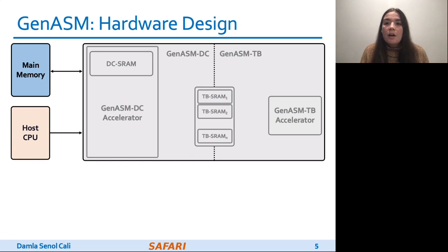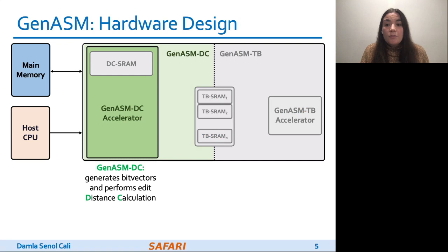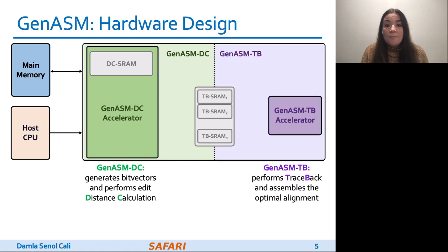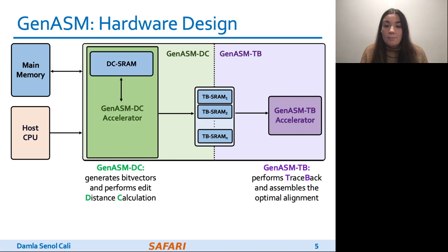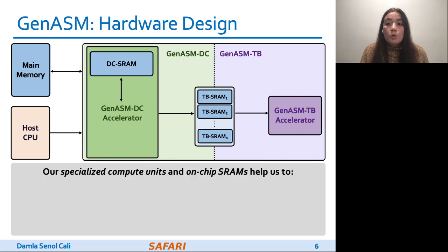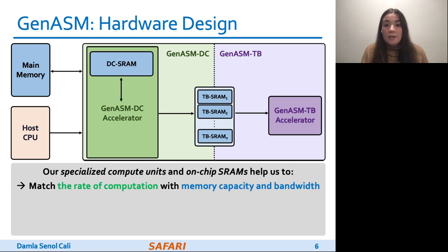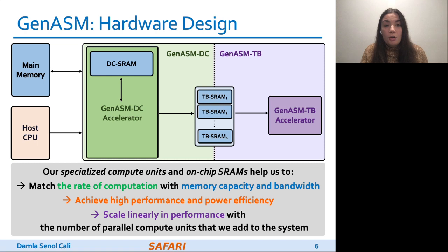Our co-designed hardware consists of two components. First, GENASM-DC, which provides hardware support to efficiently execute our modified BitAP algorithm to perform distance calculations. And second, GENASM-TB, which provides hardware support to efficiently execute our novel traceback algorithm to find the optimal alignment. GENASM also has two types of SRAM buffers, DC SRAM and TB SRAMs. Our specialized compute units and on-chip SRAMs help us to match the rate of computation with memory capacity and memory bandwidth, achieve high performance and power efficiency, and also scale linearly in performance with the number of parallel compute units we add to the system.